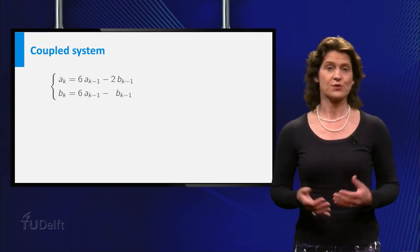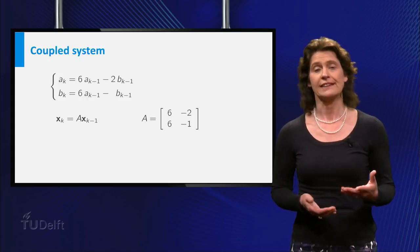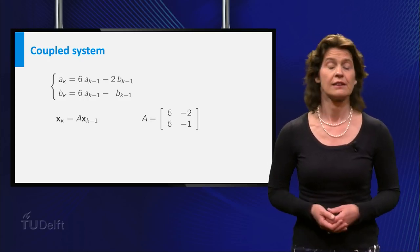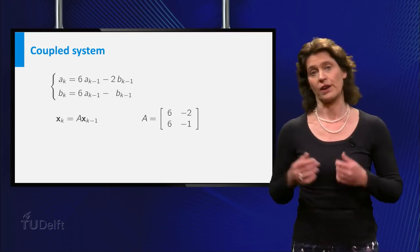Writing this in matrix form is not the problem. xk equals A times xk-1. And now A is the matrix (6, -2; 6, -1).